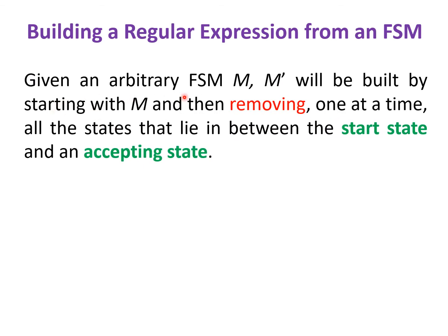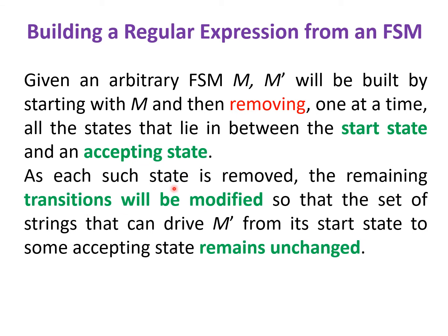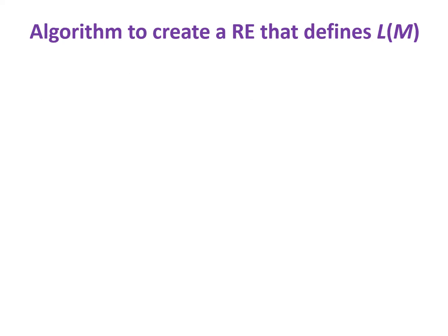Given an arbitrary FSM M, M' will be built by starting with M and then removing one at a time all the states that lie between the start state and an accepting state. As each such state is removed, the remaining transitions are modified so that the set of strings derivable from the start state to some accepting state remains unchanged. This six-step algorithm creates a regular expression that defines L of M.